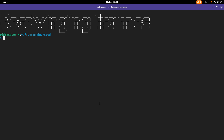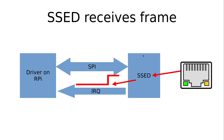Before we start implementing some code, let's take a look at how the reception of frames is working with the SET device. I have prepared a small set of slides to explain the reception of frames. On the left hand side we have the driver running on our Raspberry Pi and on the right hand side we have our simple SBI Ethernet device.